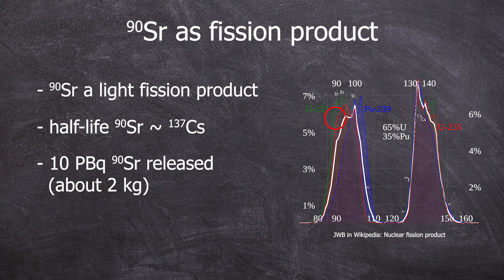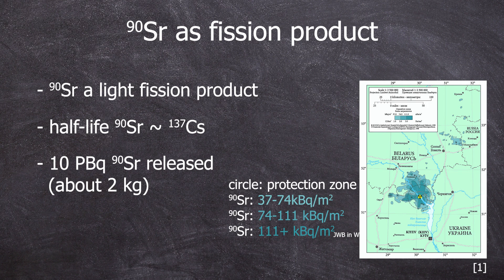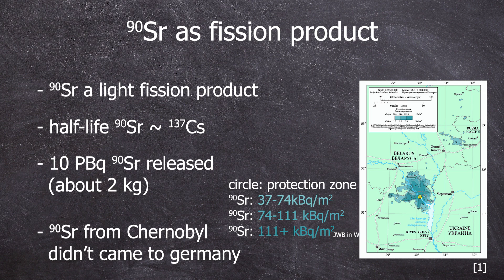Just to throw in some numbers, about 10 petabecquerels of strontium-90 were released by Chernobyl. Strontium-90 is not as volatile as cesium-137. Through radioactive fallout it then reaches the earth surface. So up to 90% of all strontium-90 can be found in the top 5 centimeters of soil.